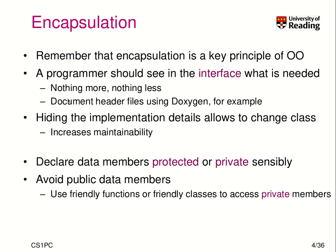Encapsulation is one of the key principles of object orientation. A programmer using an interface should see in the interface what is needed — nothing more, nothing less. This is useful when documenting header files using Doxygen, so users can understand how it is used, similar to cplusplus.com's illustration of the standard template library. We should hide implementation details, which allows us to change classes depending on different implementations — one might be better suited for certain hardware and more performant. This increases maintainability by loosening the coupling between the user of an API and the implementation.